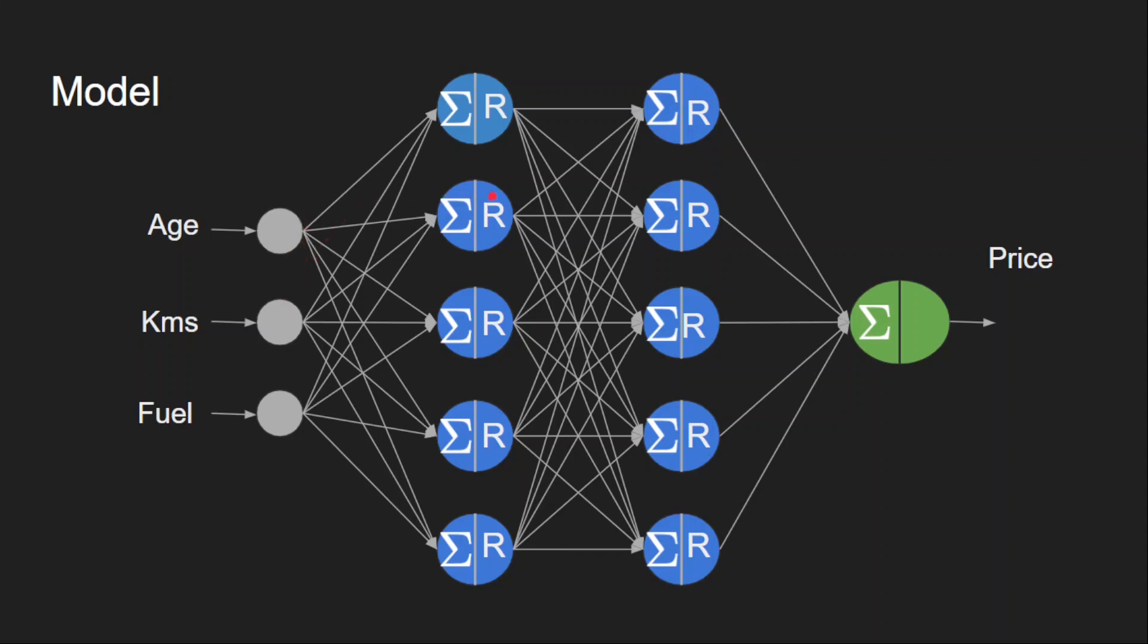So, excluding the input layer, we have two hidden layers and one output layer. So, it is a three layer network. Let's assume that our weights are randomly initialized. If you observe here, I have taken the weighted sum and applied ReLU activation on all the neurons of both the hidden layers. I have also computed the weighted sum in the output layer. Now, here is the question. Which activation function should we use in this output layer?